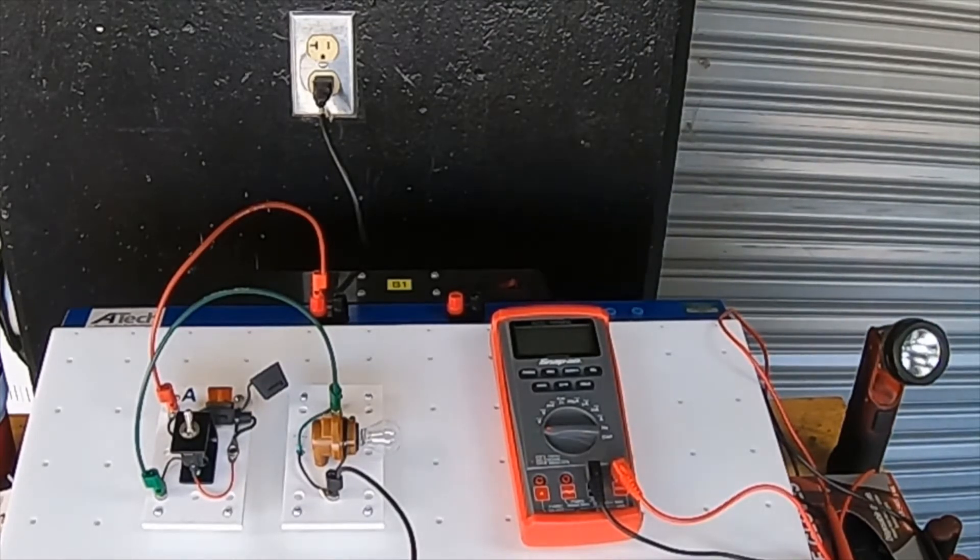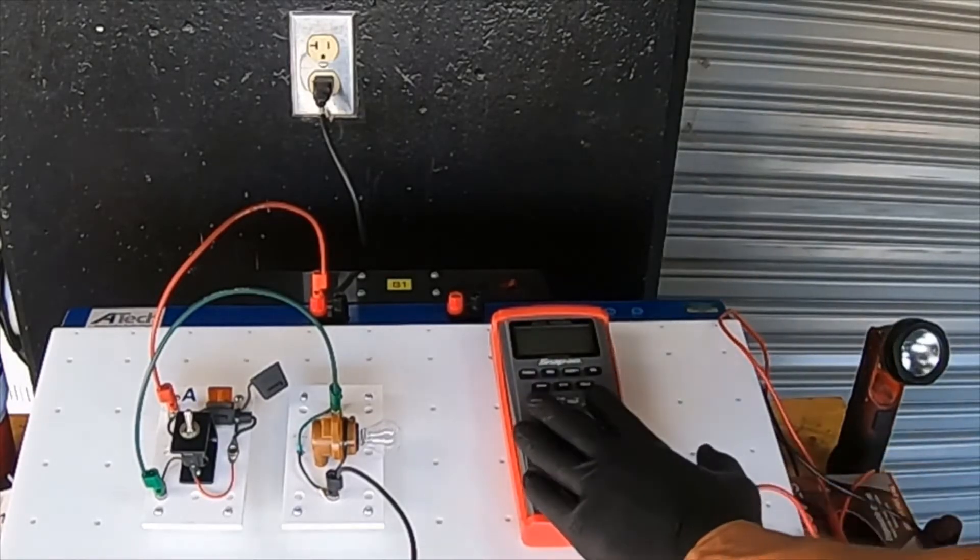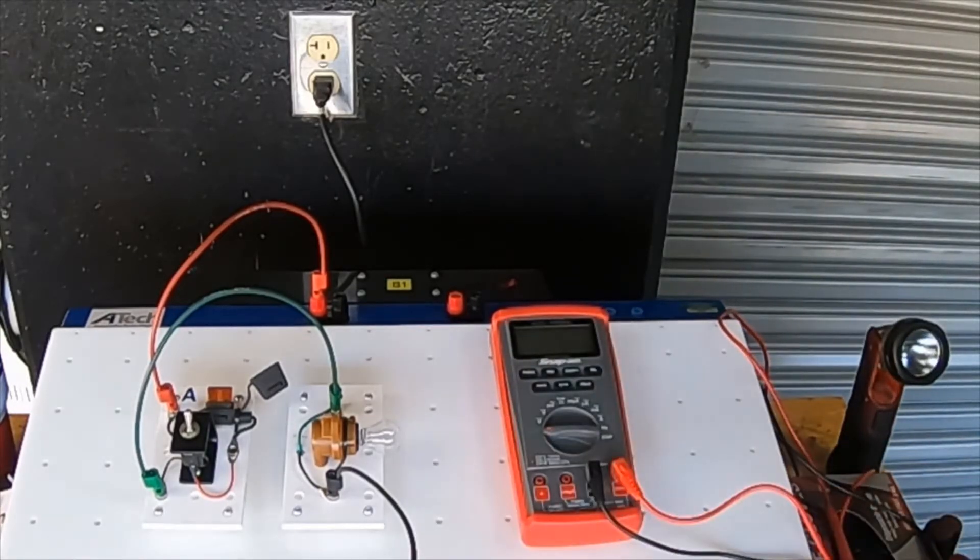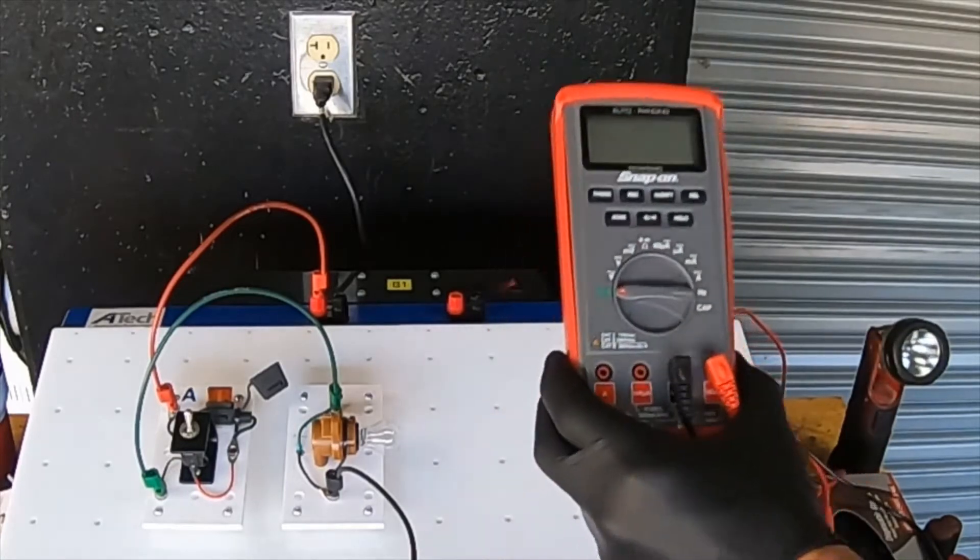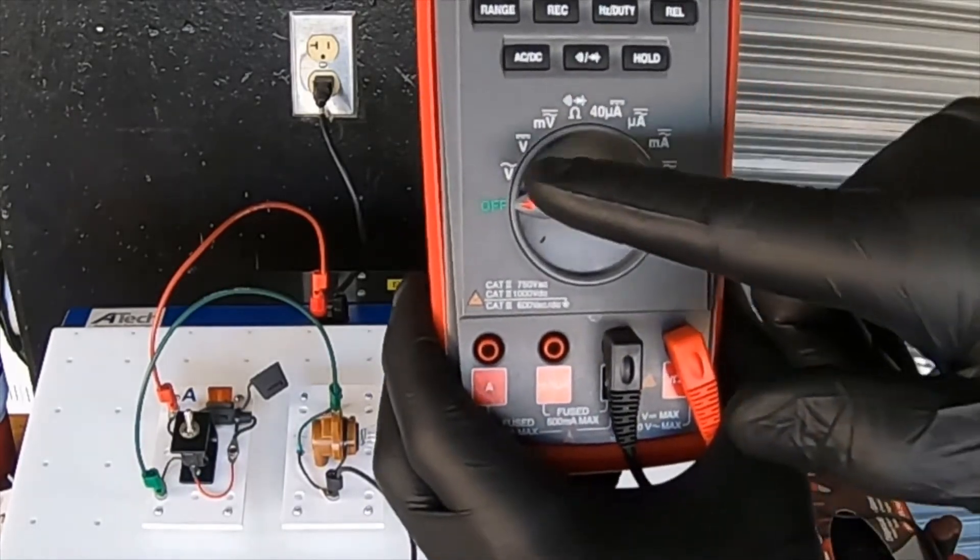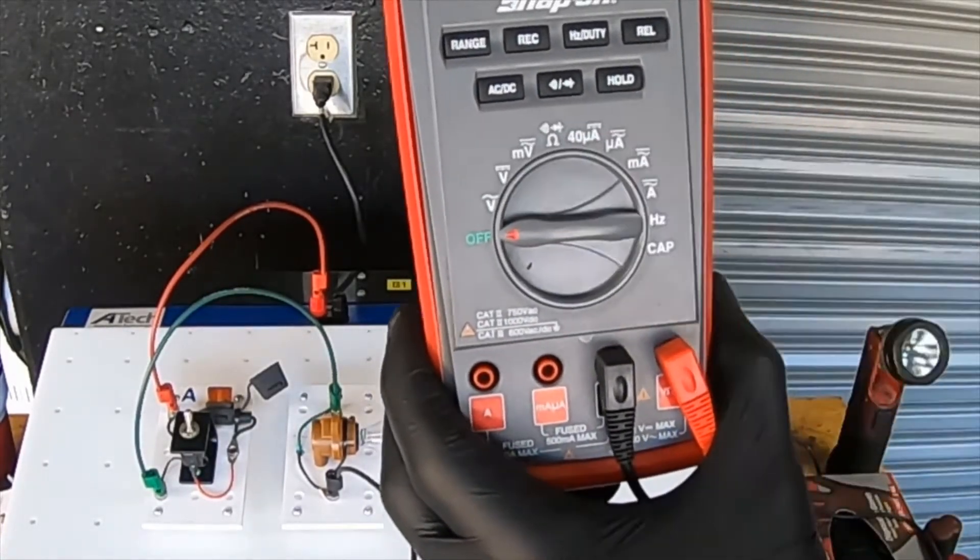In order to do this, we will need a DMM or digital multimeter with a voltage setting. There are two voltages: AC voltage and DC voltage.